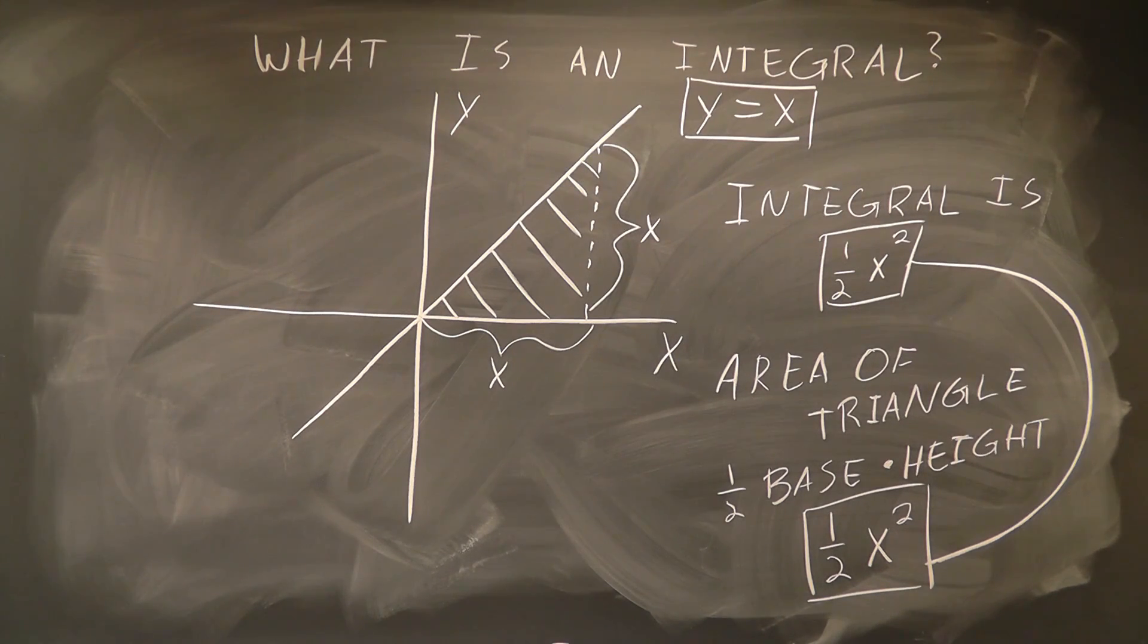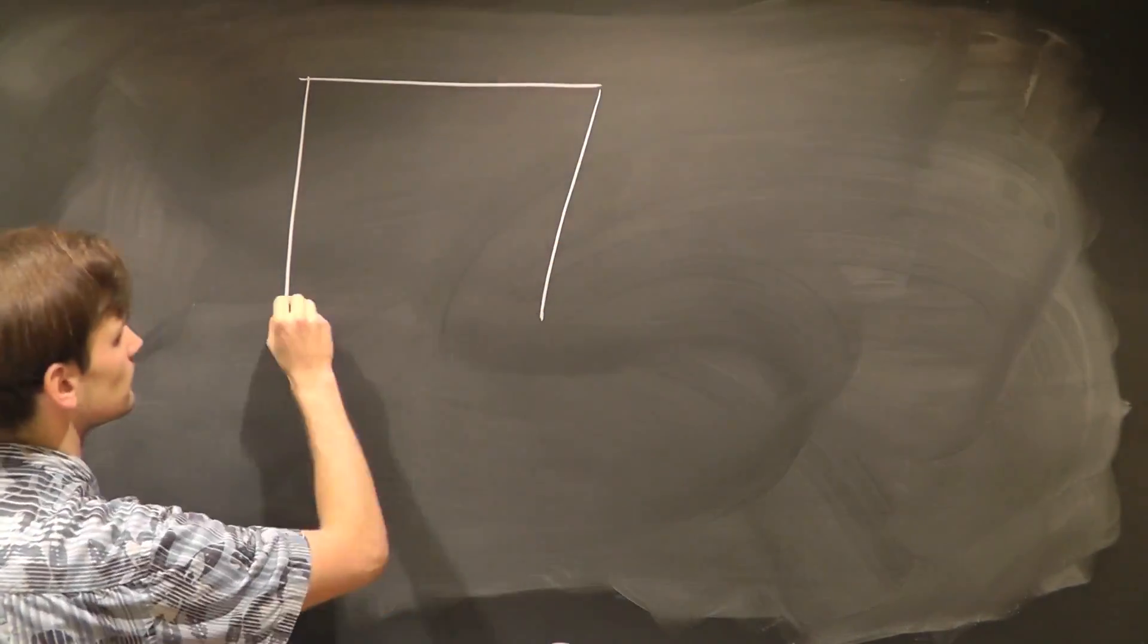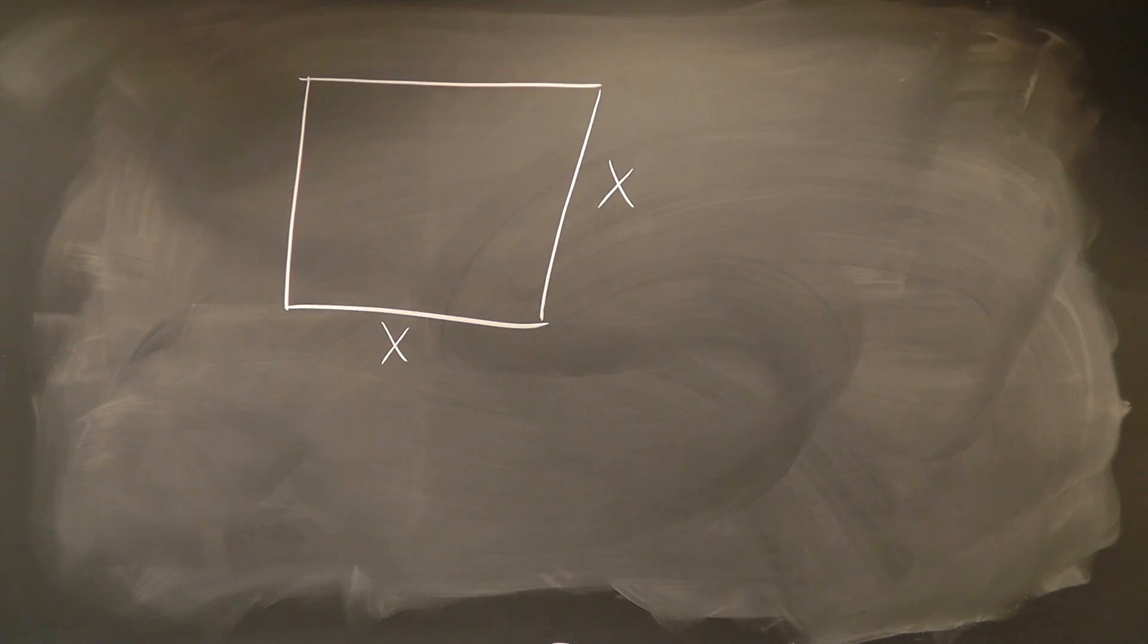So let's think of this problem a little differently. Instead of an XY axis with a line on the axis, let's imagine a box with width and height x. Inside of this box, let's embed the same triangle we saw before.